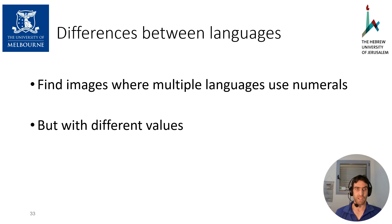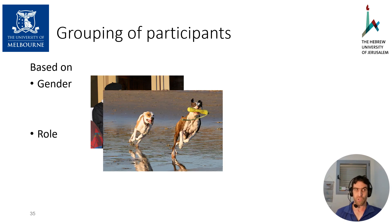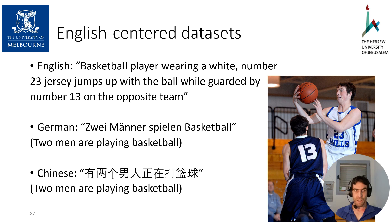We also studied differences between languages by finding images where different languages described using numerals but the numeral value differed. We find two main reasons for such differences. First, different languages tend to group or split participants based on gender — 'a man and two women' versus 'three people' — or age: while English and German annotators describe an image as 'an adult and two kids,' Chinese annotators use 'three people.' Second, the datasets were originally built for English speakers and include images more related to American culture. For example, most sports images are of baseball and basketball, which English speakers describe with many details, commonly mentioning the player's shirt number, while other languages tend to say something like 'two men are playing basketball.'